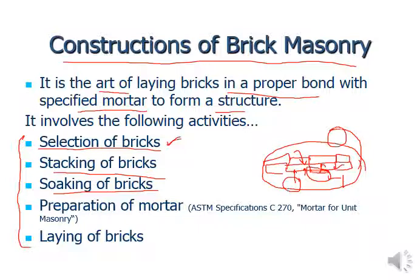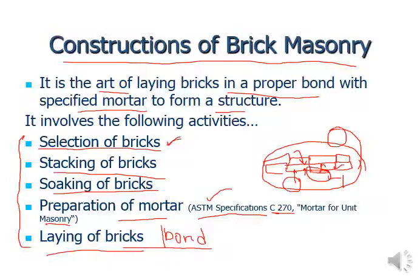Preparation of mortar must follow ASTM specification C270 (Mortar for Unit Masonry) and should not be done randomly. Then comes laying of bricks, which includes the brick bonds discussed throughout the chapter. Perpends (vertical joints) should not align in consecutive courses — they can align in alternate courses but not consecutive ones. The bond should transfer load uniformly throughout the wall and distribute it toward the foundation.